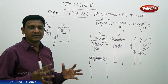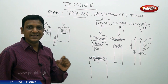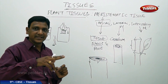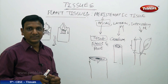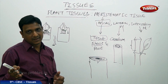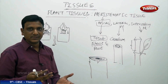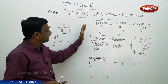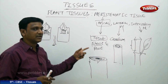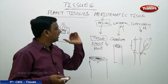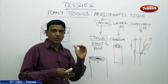Meristematic tissue is found in the actively growing parts of a plant. The apical meristem is found at the tip of root and shoot. Gardeners trim the shoot tips so that new branches arise, making the plant bushy rather than tall. The lateral meristem is found between vascular bundles and increases the girth, while the intercalary meristem is found between nodes and increases plant height.